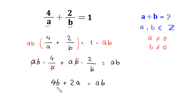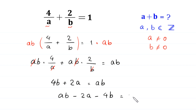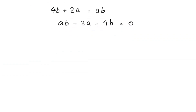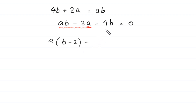Now we move 2a and 4b to the right hand side. This becomes ab minus 2a minus 4b is equal to 0. From the terms ab minus 2a we can factor out a, giving a times (b minus 2) minus 4 times b is equal to 0.